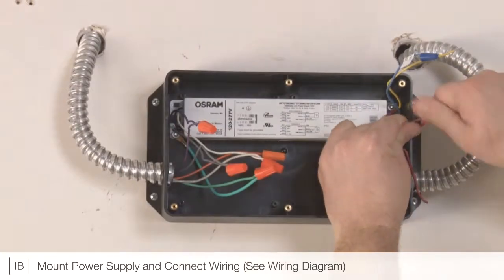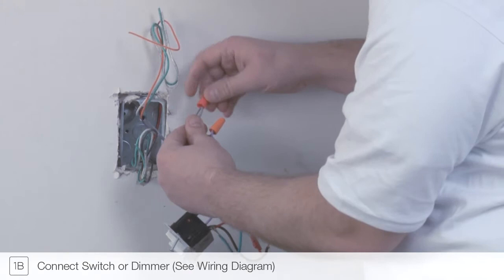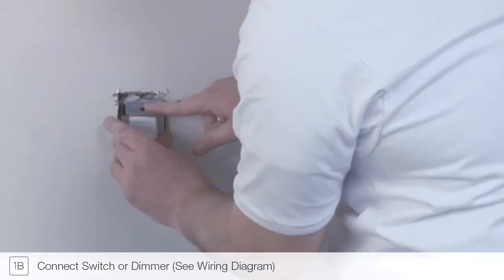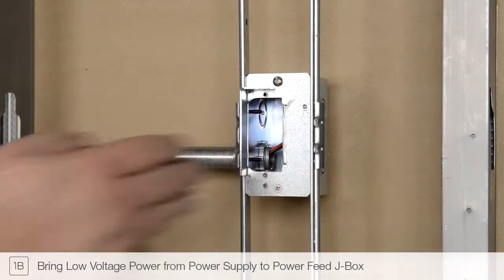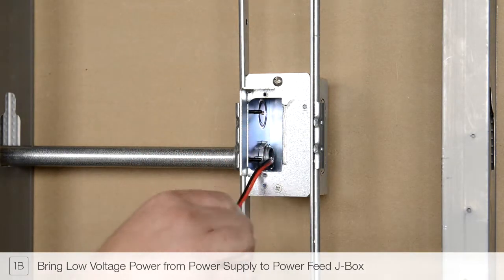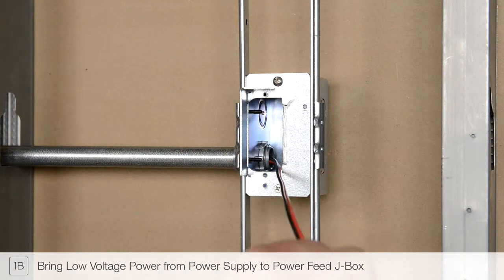Reference the wiring diagram included with your installation instructions to connect either a standard switch or a compatible dimmer. Route the low voltage power wires from the remote power supply to the power feed junction box.